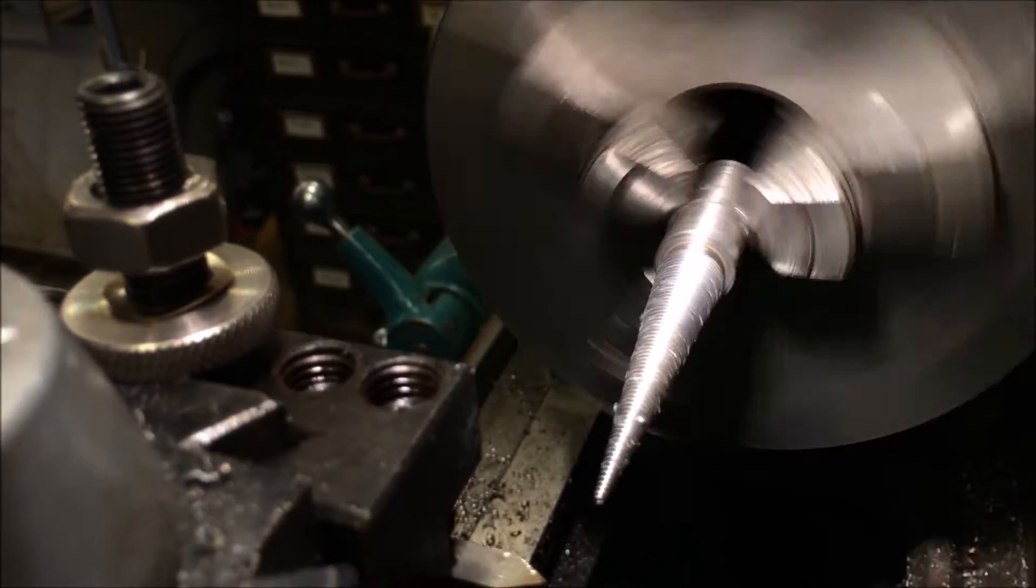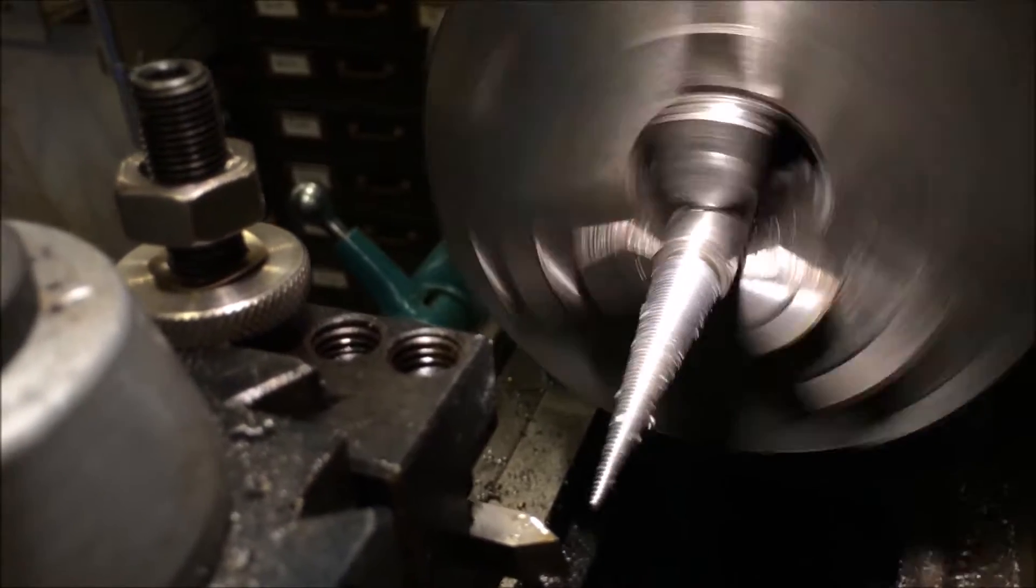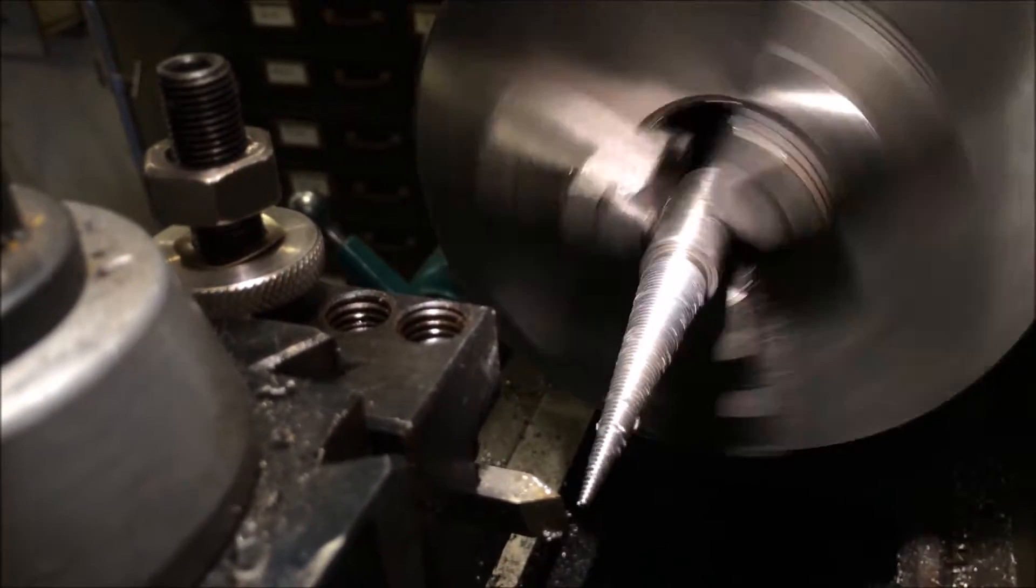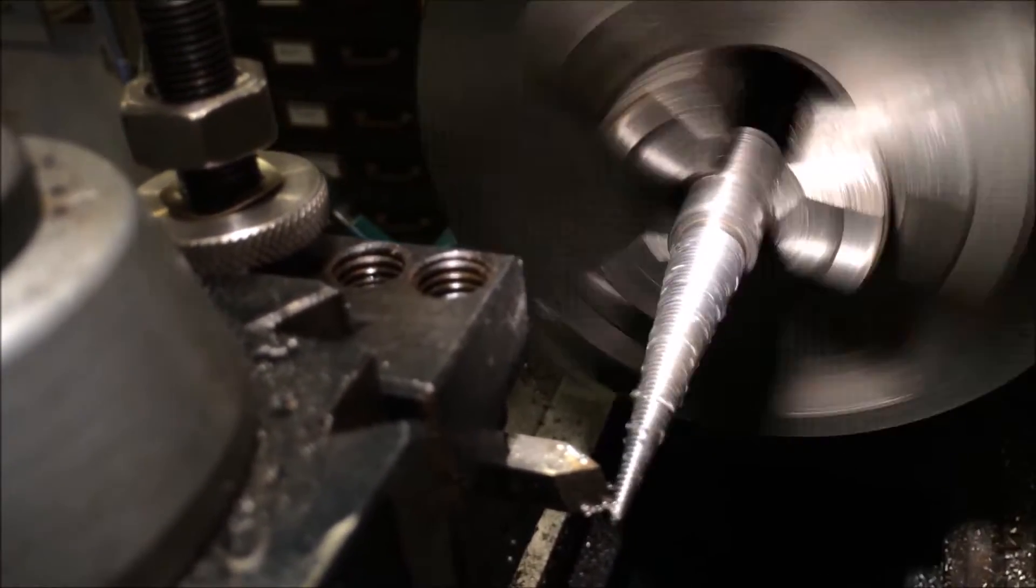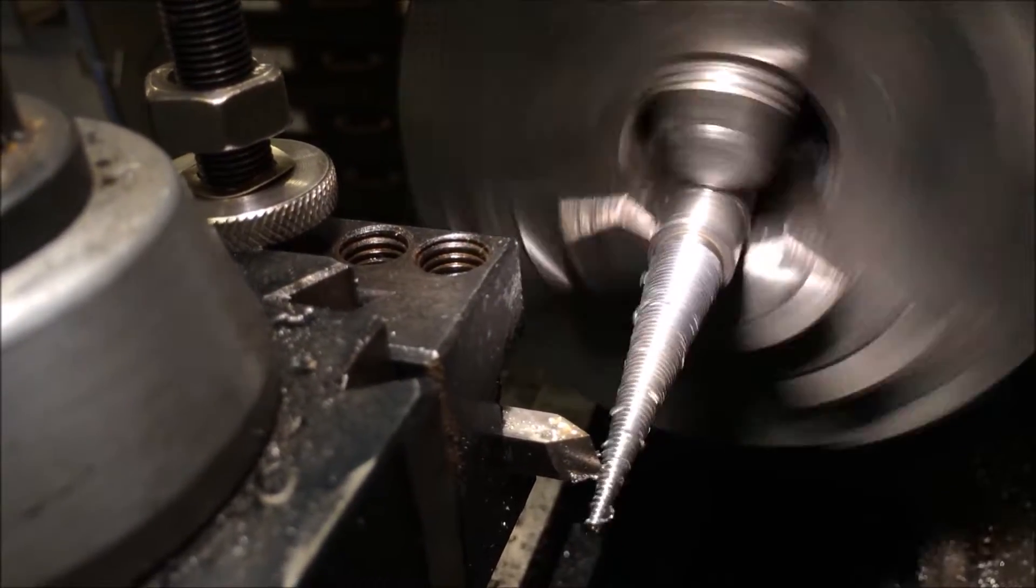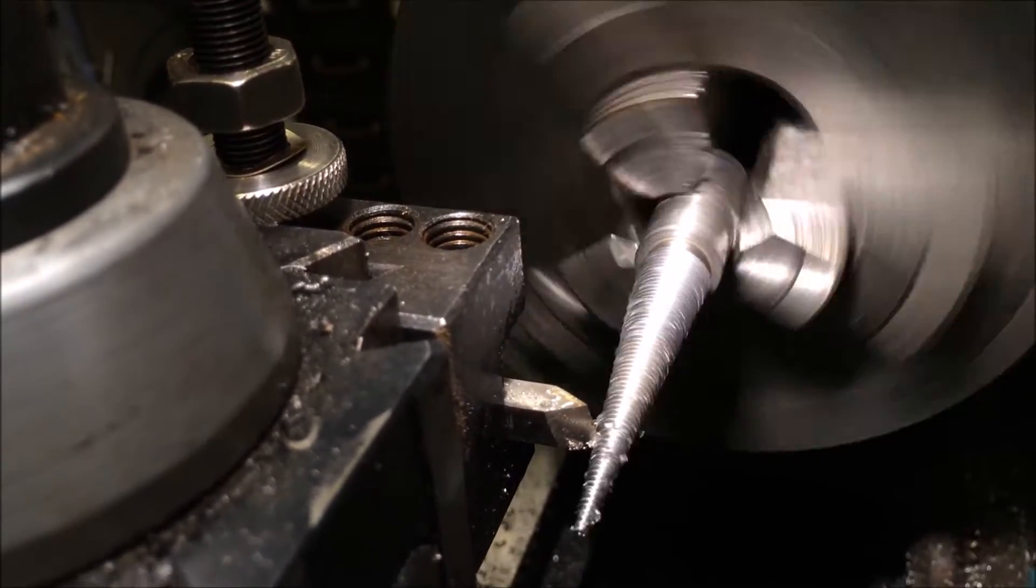These are tapered, threaded tapers that hold the buffs in place. You have to make one right hand and one left hand, because you put one on each end of the arbor of the motor.